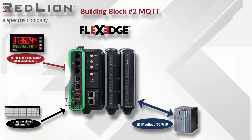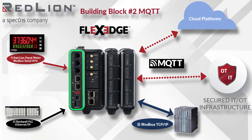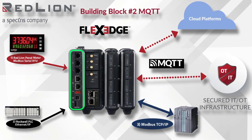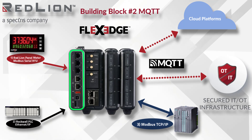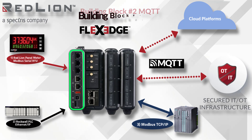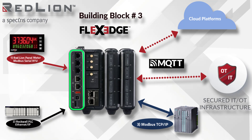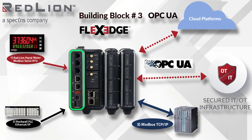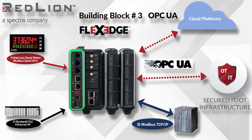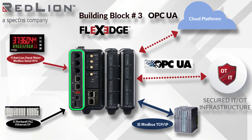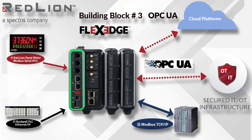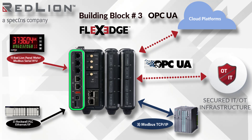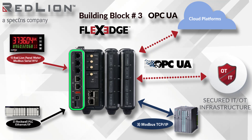In Building Block 2, MQTT, we demonstrated how you can utilize our built-in cloud connector to send your data to SCADA, enterprise, or cloud-based systems. As we move forward to Building Block 3, we'll demonstrate another standard feature built into Crimson: OPC UA Client Server. Red Lion's OPC UA Client Server capability can simplify your data aggregation, enabling you to gather data from legacy as well as new devices to enhance your capability to unleash the power of your data.